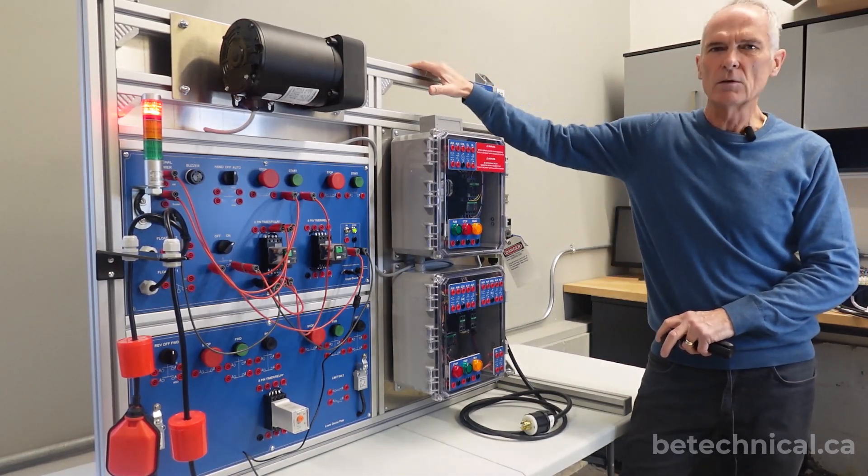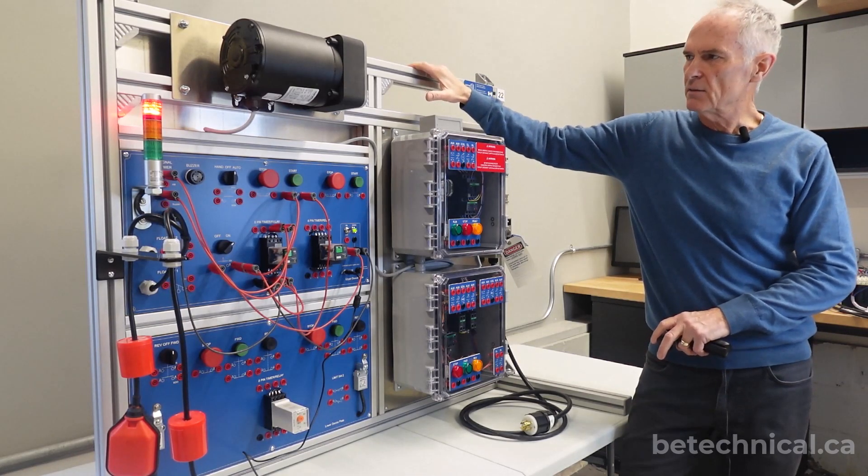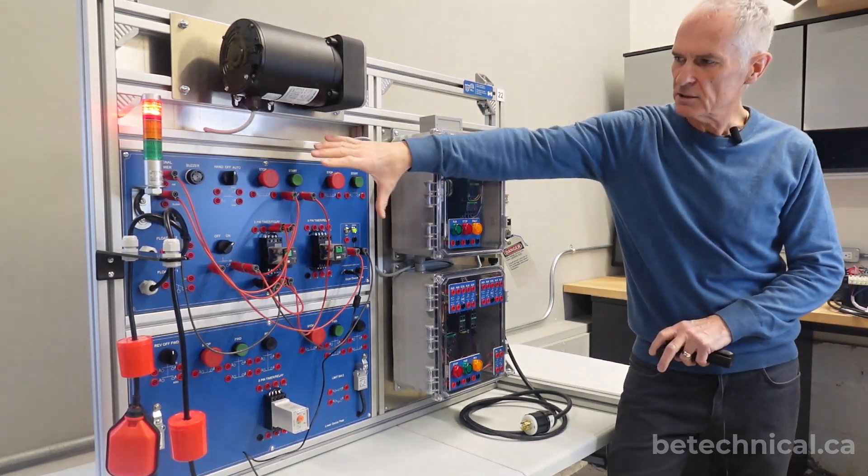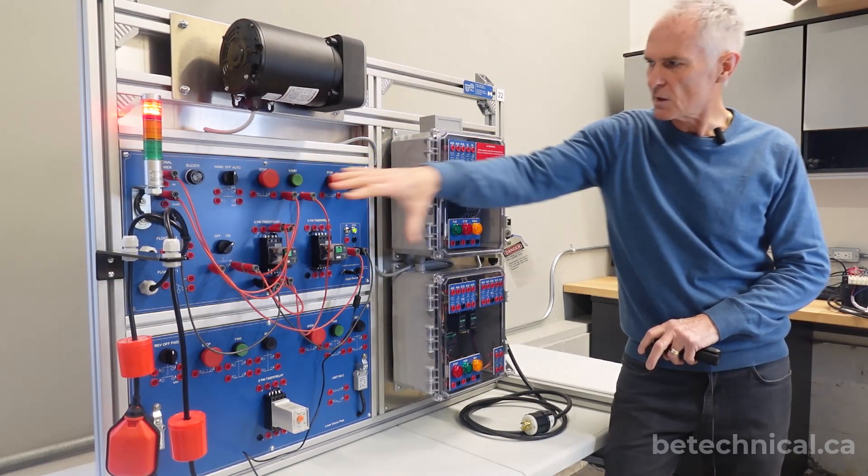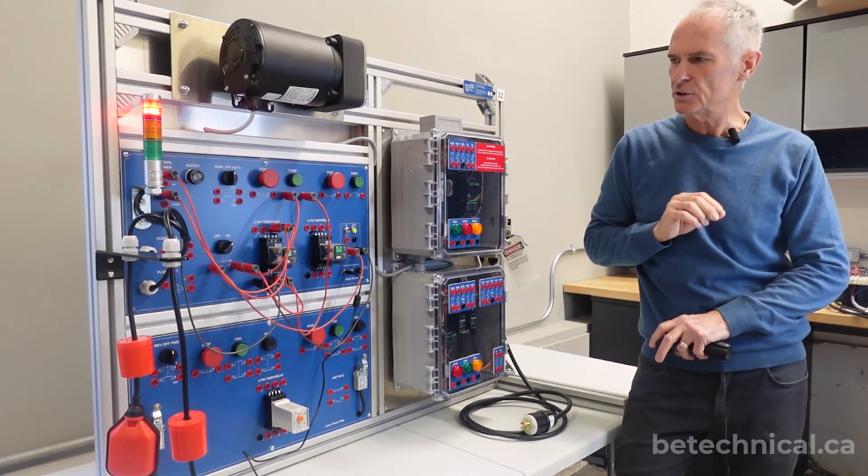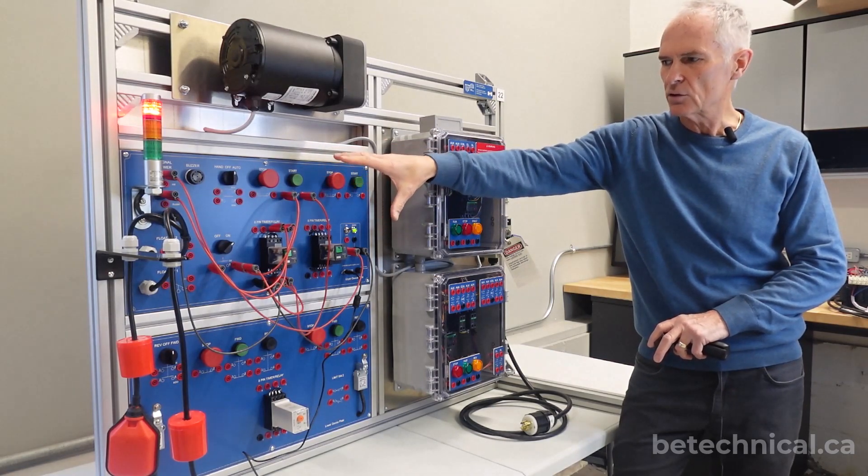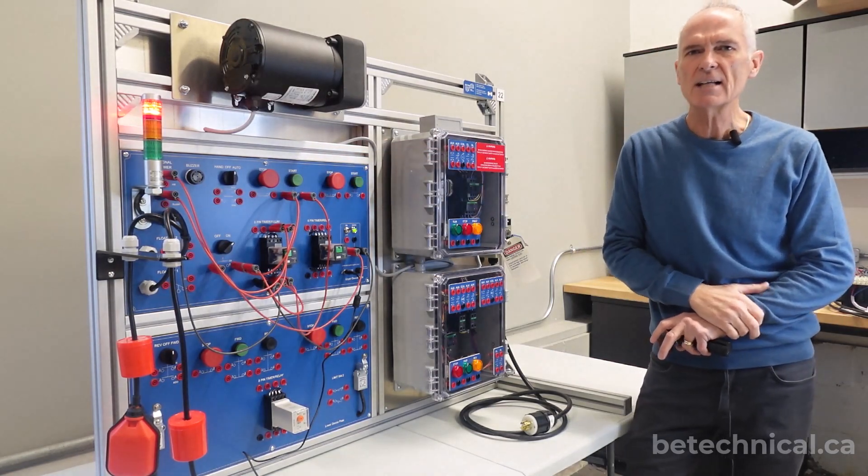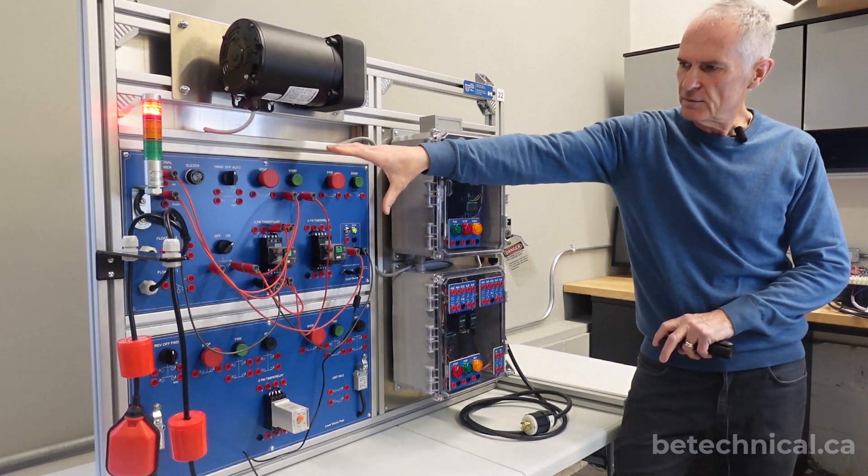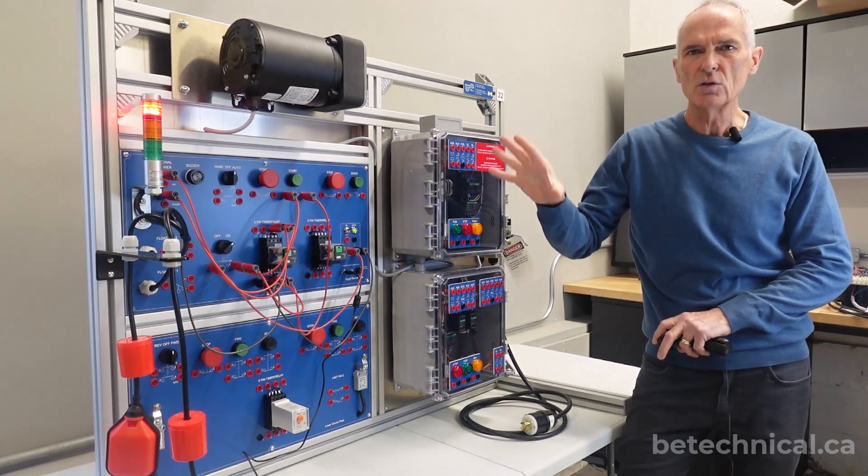So I just wanted to go over some of the main features of this unit. One of the most important aspects of the training system is that it has two independent sections. We have a control section and we have a power section and they are powered independently of each other. The control section uses either a 24 volt AC or a 24 volt DC class 2 power supply which limits the energy and allows students to configure circuitry and test their circuitry in a controlled and safe manner.